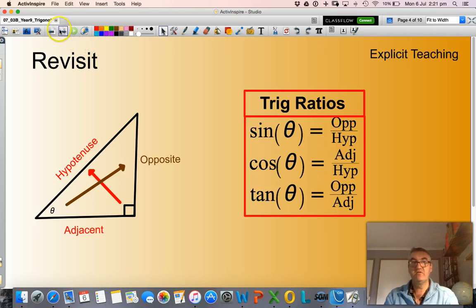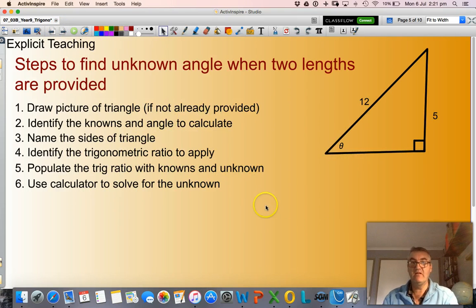We are going to work through three examples. And by that time, at the end of that, you should be fairly comfortable in calculating the angles in right angle triangles when two lengths are provided. First example here, you see my right angle triangle.